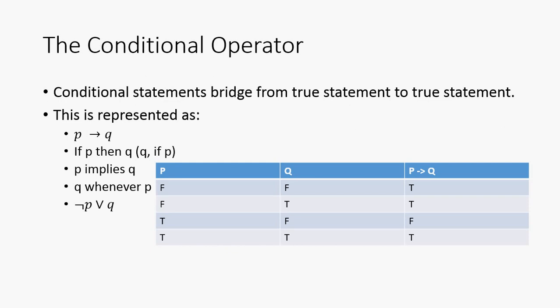Now, we have the conditional operators. Conditional statements bridge from true statement to true statement. You might have heard of these as if-then statements or implications. So, it's typically represented symbolically by this little arrow here. So, P implies Q. Or, in English it should be if P then Q.